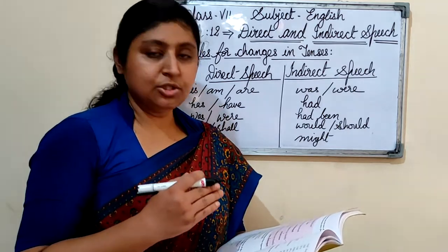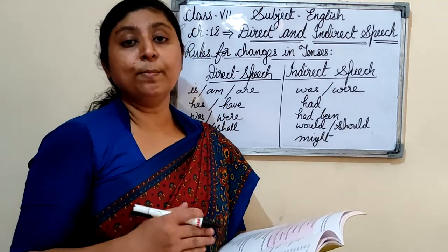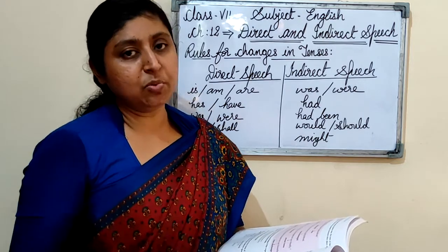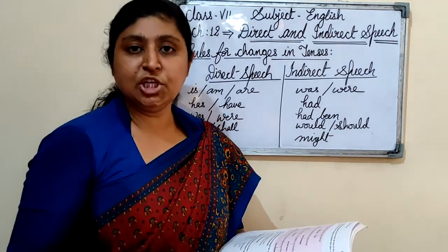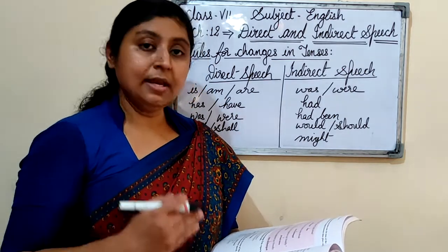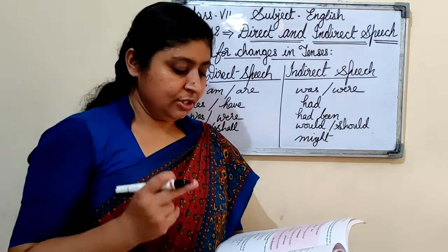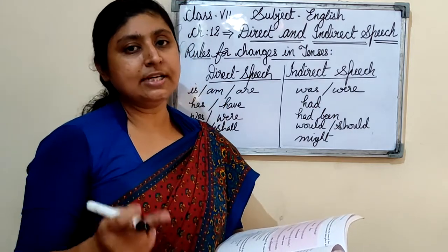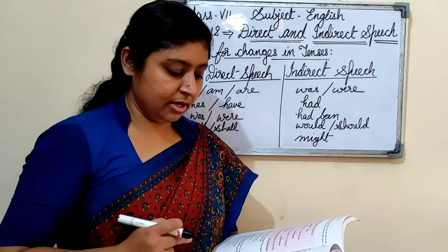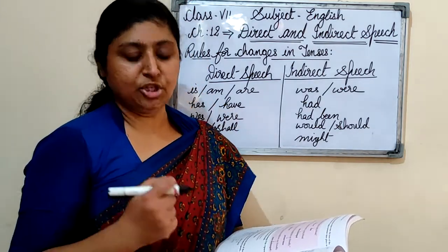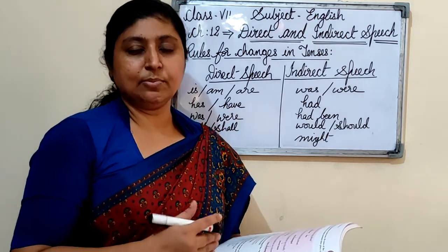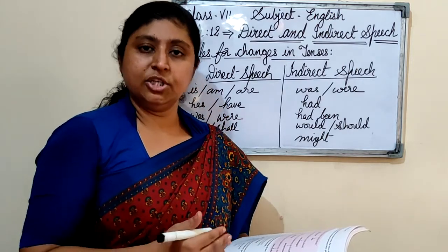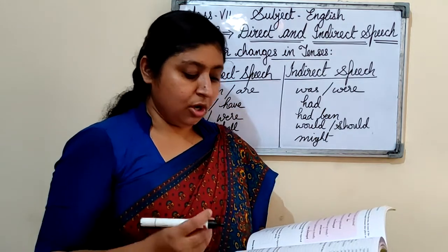If the reporting verb is in past tense, time and place words also change. 'This' changes to 'that'; 'these' to 'those'; 'here' to 'there'; 'now' to 'then'; 'today' to 'that day'; 'tonight' to 'that night'; 'tomorrow' to 'the next day'; 'yesterday' to 'the previous day.' These are the rules when changing tenses in direct to indirect speech.